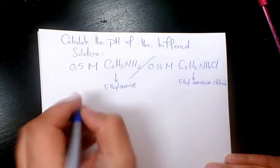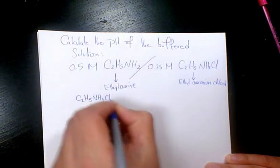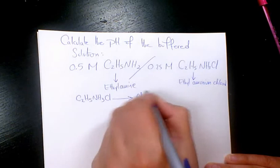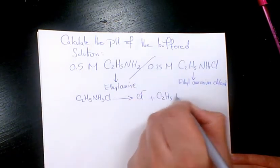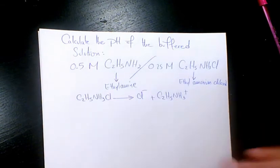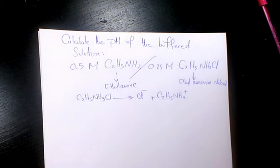Which when it dissociates, it is gonna give us Cl minus plus the cation which is gonna be NH3 plus. So this one is the acid and this one is the base.